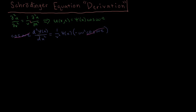For the rest of the video, what we'll be deriving is just the spatial part of the wave equation — the spatial part of the Schrödinger equation, which is called the time-independent Schrödinger equation. We'll see how time works in the Schrödinger equation in later videos. Right now we have the second derivative of psi with respect to x, and moving the minus sign over to the other side, we get plus omega squared over v squared times psi of x equals zero.